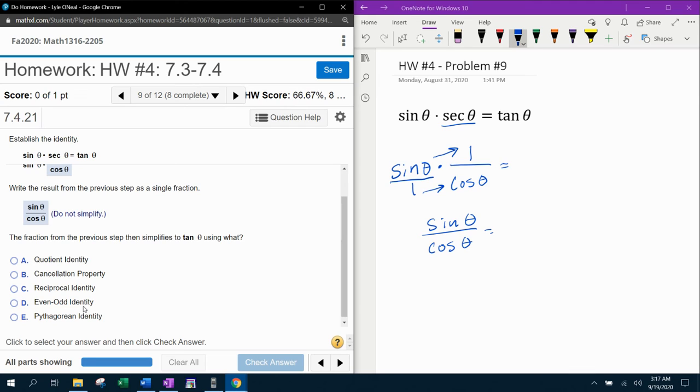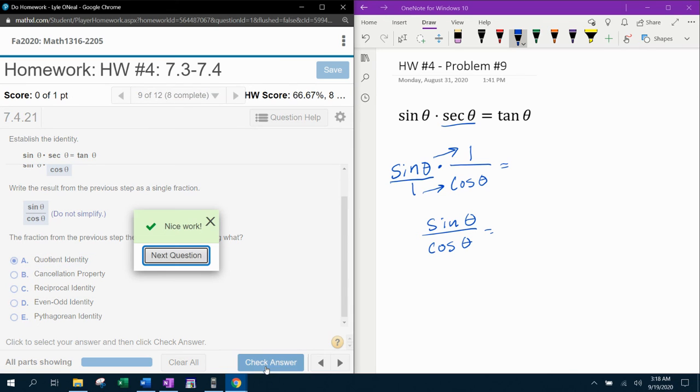If I know what it can't be, then I'll know what it has to be. Cancellation, even-odd, Pythagorean, none of those fit. It's either a reciprocal or a quotient. It's not a reciprocal identity because that would mean flipping something over. No, this is the quotient identity. Quotient in math means a fraction. So that means that tangent theta as a fraction is sine over cosine. That is a quotient identity.